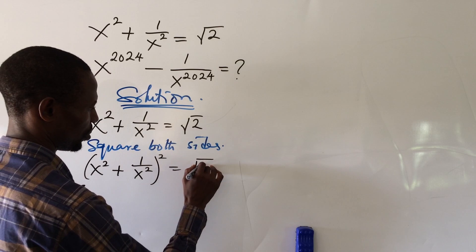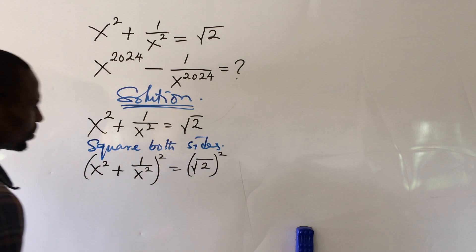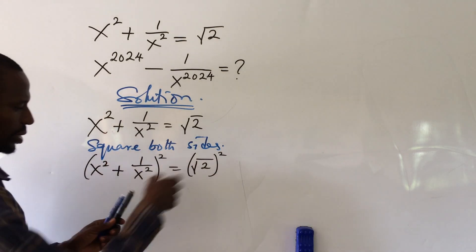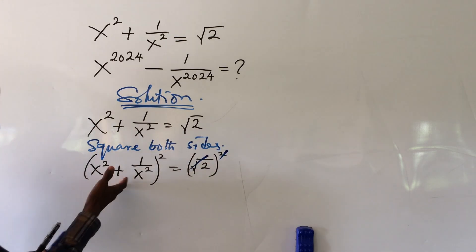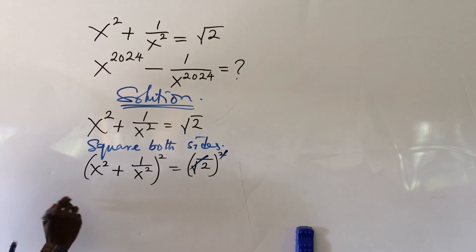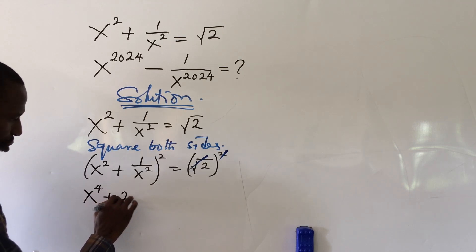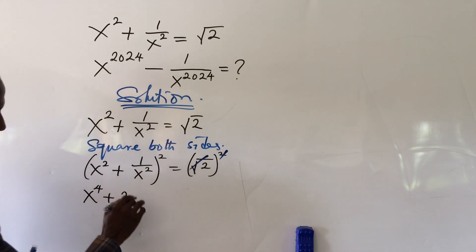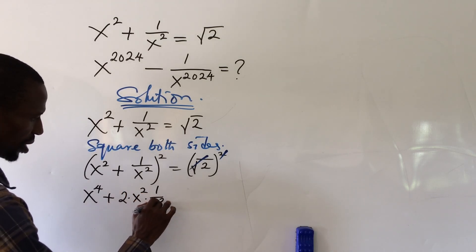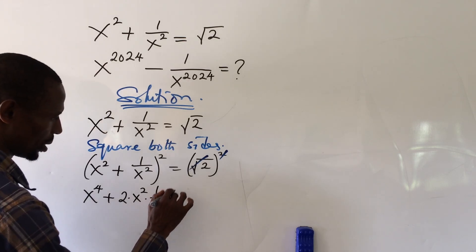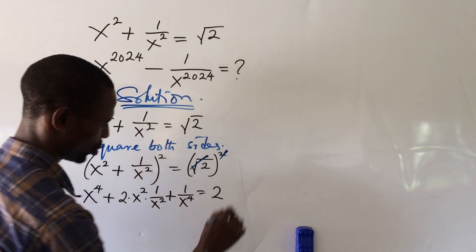Equal to square root of 2, quantity squared. If we square the right side, we take care of the radical and are left with 2. On the left side, squaring gives us s to the power of 4, plus 2 times s to the power of 2 times 1 all over s to the power of 2, plus 1 all over s to the power of 4, equal to 2.